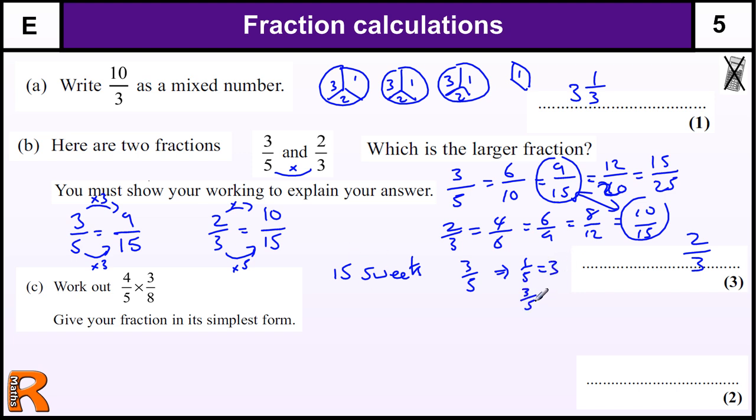So three-fifths would be three lots of that, which is nine sweets. If we work out two-thirds of the sweets, one-third would equal five sweets, and two-thirds would be ten sweets. Clearly two-thirds is more sweets than three-fifths, therefore two-thirds is bigger. That's a valid way of showing which one's bigger.